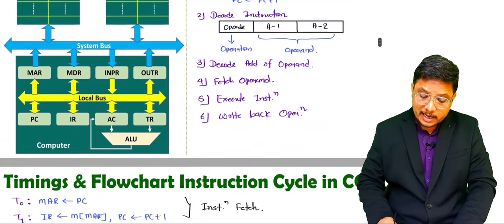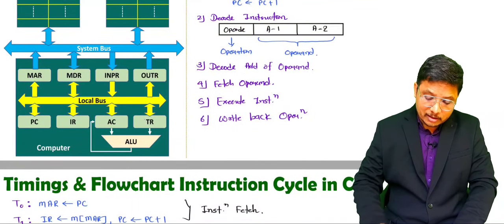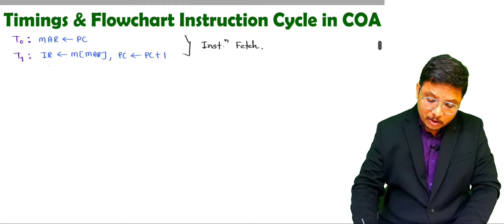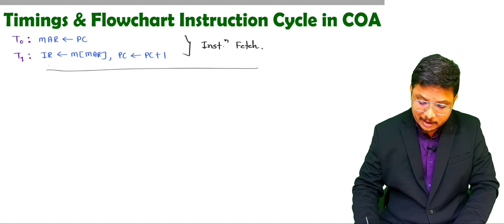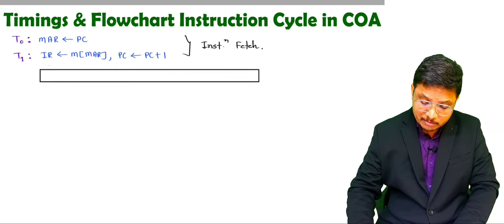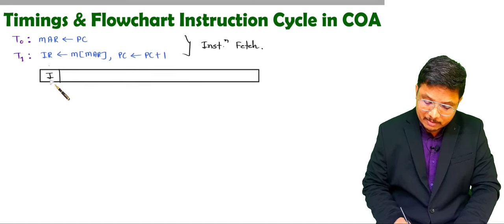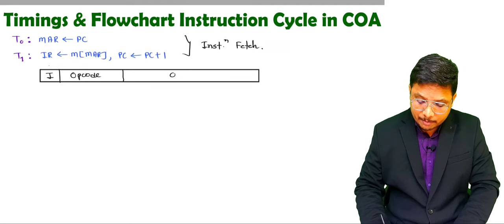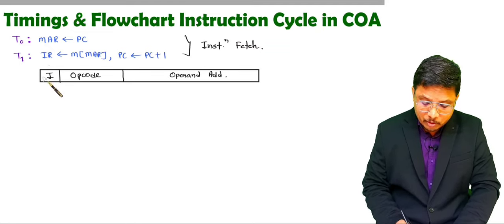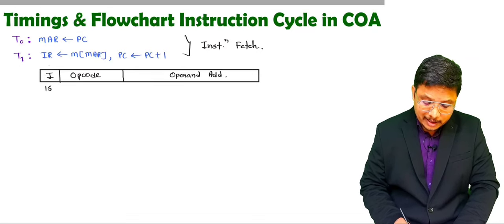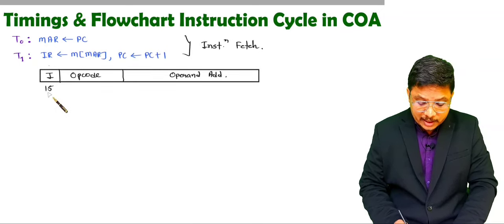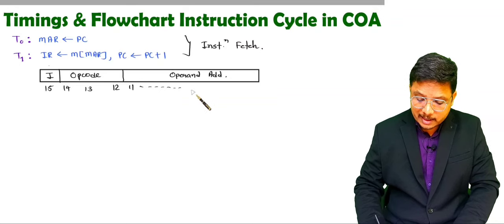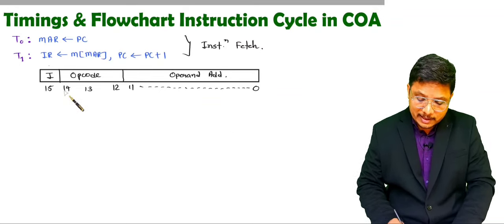The second step is to decode the instruction. When you want to decode the instruction, you will have to see the content of the IR register. Before I explain the decode operation, you should know the basic format of instruction. I will be explaining one instruction with the format of 16 bits. In that, the first bit will be the I bit, then there are three bits for the opcode, and then there will be the address of operand. This is the most significant bit identifying the mode — it is a 16-bit format. So the I bit is bit 15, opcode occupies bits 14, 13, and 12, and bits 11 to 0 are for the operand's address.